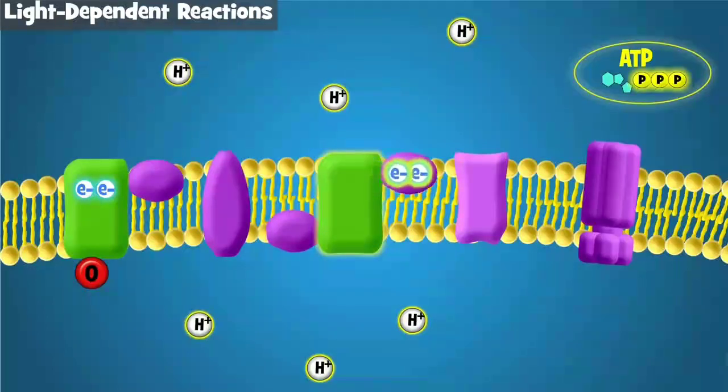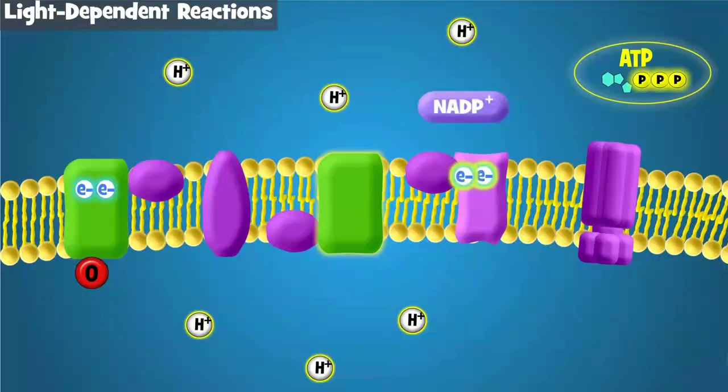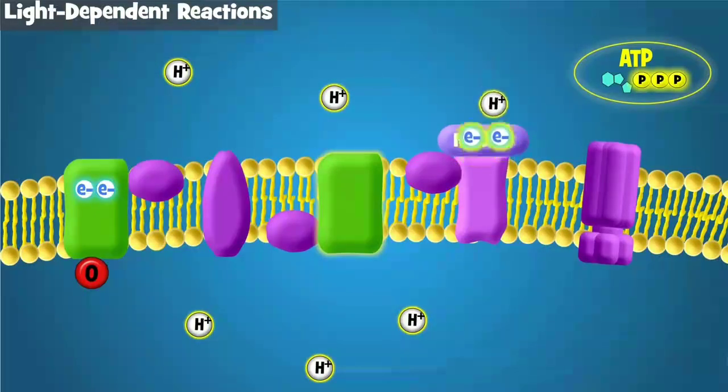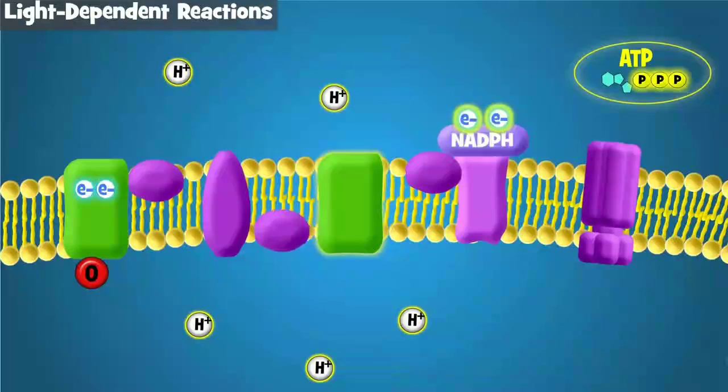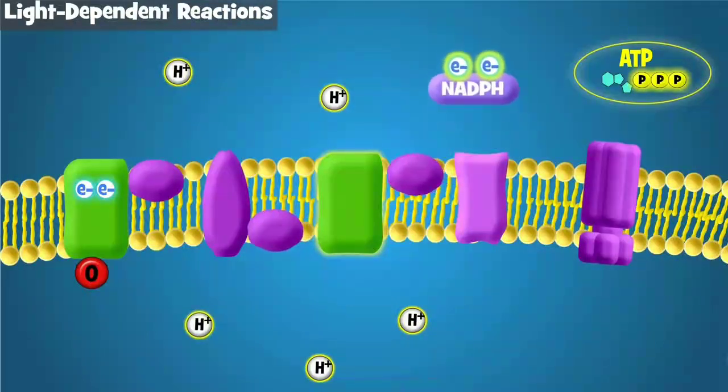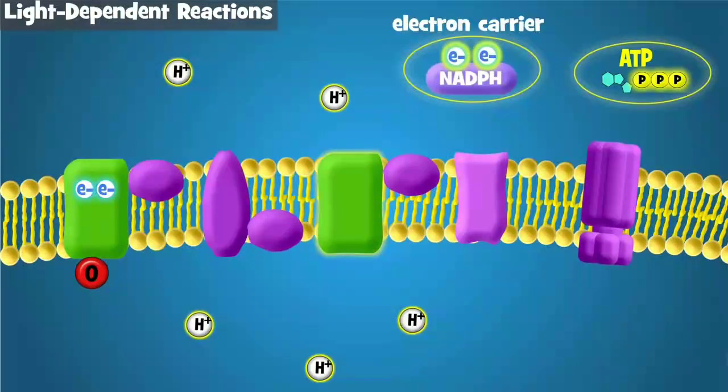They travel down a second, shorter electron transport chain, where they are accepted by a molecule called NADP+. When it accepts the electrons, it also accepts hydrogen and becomes NADPH. NADPH is an electron carrier, and is another key product of the light-dependent reactions.